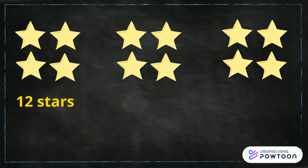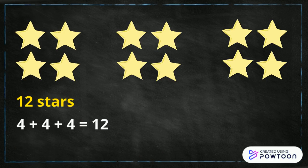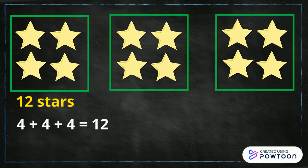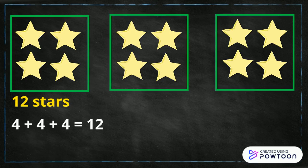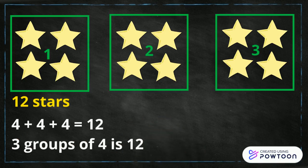How did you get that answer? You could have said 4 plus 4 plus 4 equals 12. Let's look at writing it a different way. How many groups of stars can you see and how many stars are in each group? There are 3 groups and there are 4 stars in each group. So we can also say 3 groups of 4 is 12.